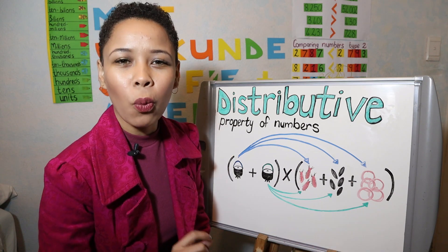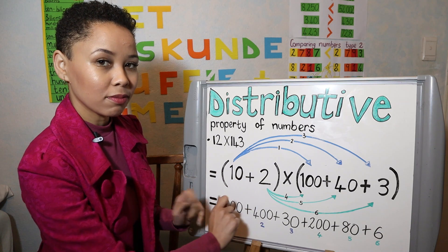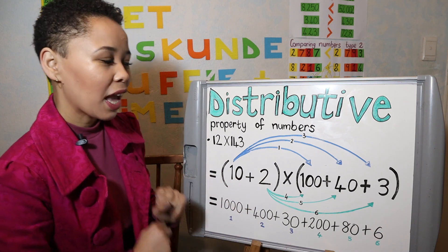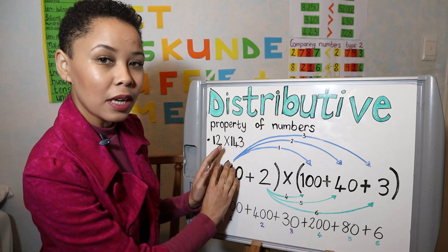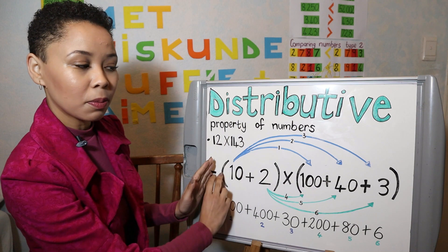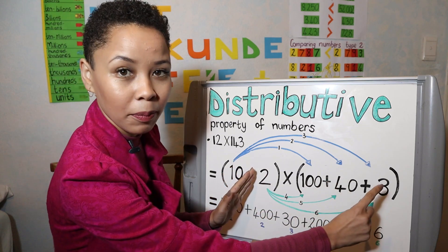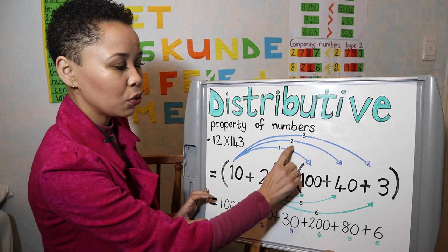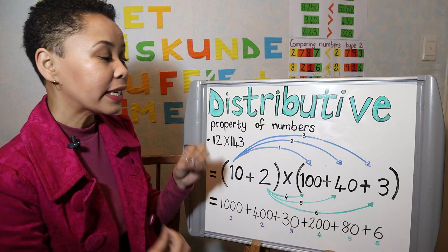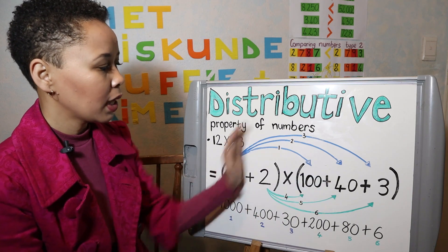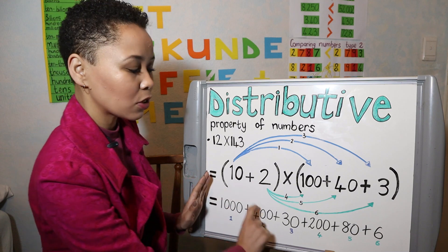So when applying the distributive property of numbers, we multiply each number in the first bracket with each term in the second bracket. In my first bracket there are two numbers — in other grades you'd call them two terms — and in my second bracket I have three numbers, so three different terms. So I will take my first number multiplied by 100, multiplied by 40, and multiplied by 3. My second number I will also multiply by 100, by 40, and by 3. This gives me 1, 2, 3, 4, 5, 6 different answers. To make it easier you can even number your little boxes like 1, 2, 3, 4, 5, 6 so you know you should have 6 answers.